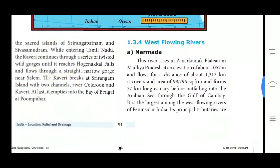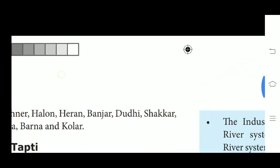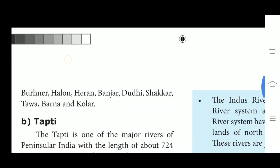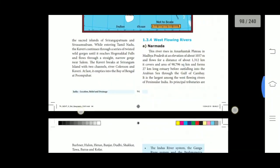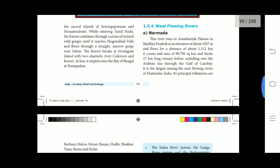Its principal tributaries are Burhner, Halon, Hiran, Banjar, Dudhi, Shakkar, Tawa, Varna and Kolar. The Narmada rises in the Amarkantak hills and forms the traditional boundary between North India and South India. It flows westward over a length of 1,312 km before running through the Gulf of Khambhat into the Arabian Sea. It flows in a rift valley between the Satpura and Vindhya ranges and is the largest west flowing river of Peninsular India.